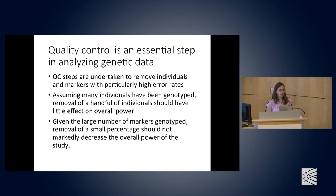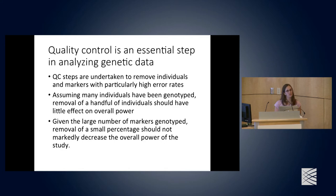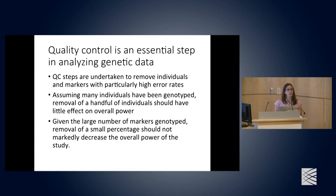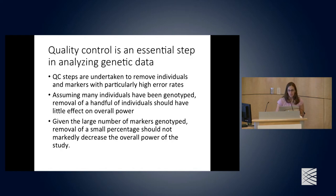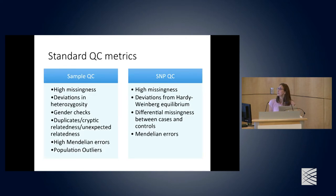Quality control is an essential step. QC steps need to be taken to remove individuals and markers with particularly high error rates. Removal of a handful of individuals should have little effect on power. Given the large number of markers genotyped, removal of a small percentage should not markedly decrease overall power, though every removed marker could potentially miss an association — hopefully recoverable through imputation.